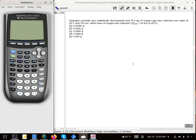Hydrogen peroxide was catalytically decomposed and 75.3 milliliters of oxygen was collected over water at 25 degrees Celsius at 742 torr. What mass of oxygen was collected?